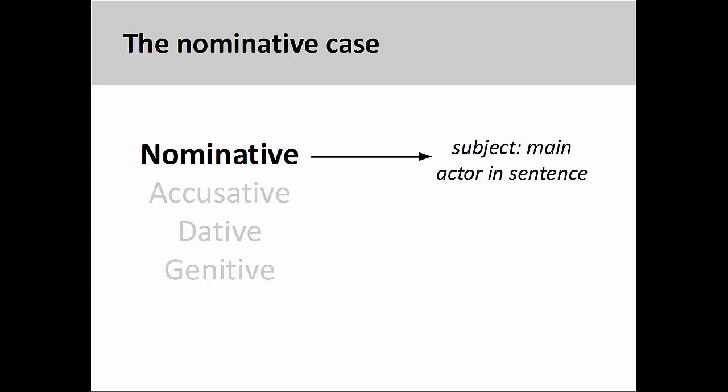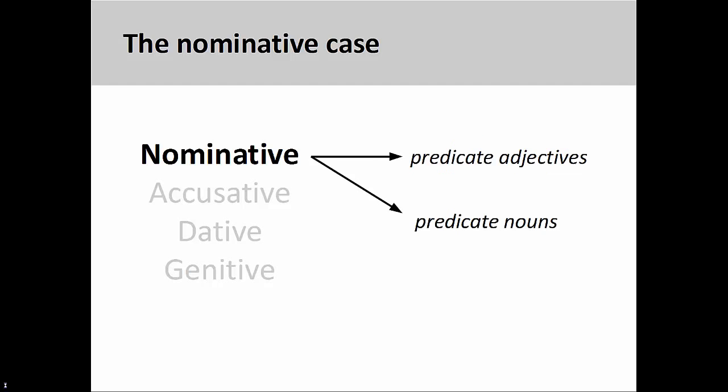The nominative case is used to mark the subject of the sentence, which is the person or thing performing the main action in the sentence. It is also used to mark the predicate adjective or predicate noun in a sentence. You may want to review the presentation on the nominative case before learning about the accusative case.